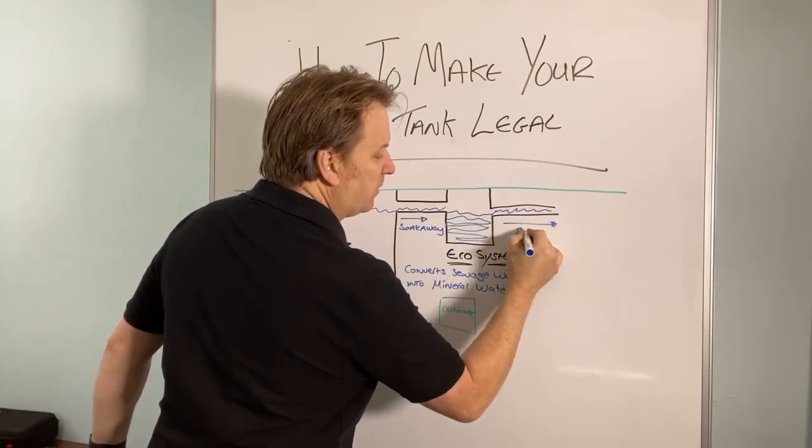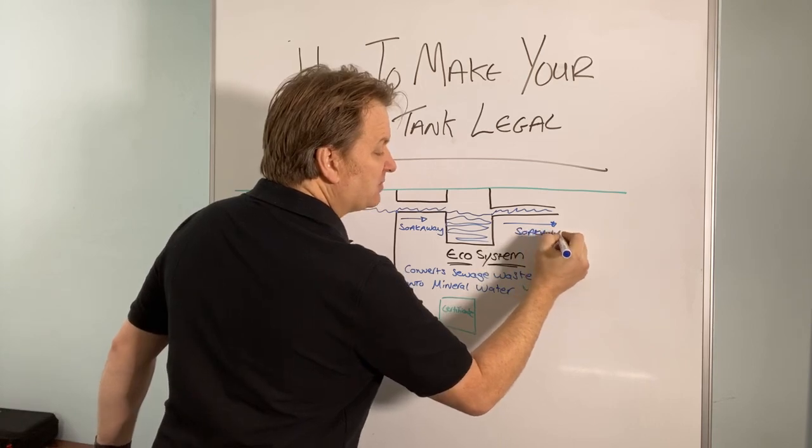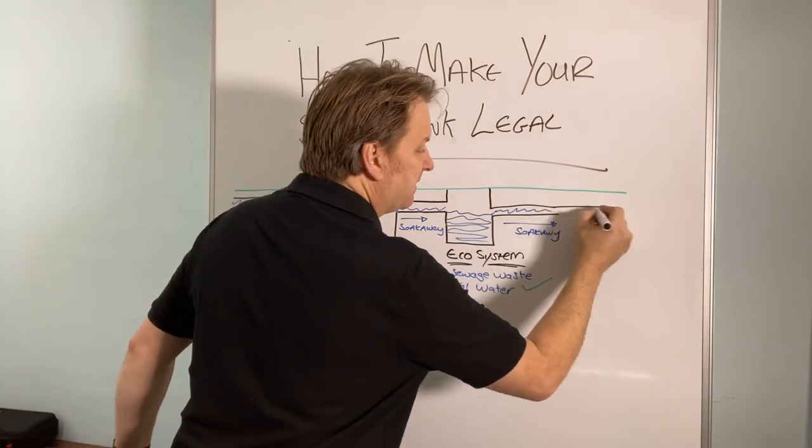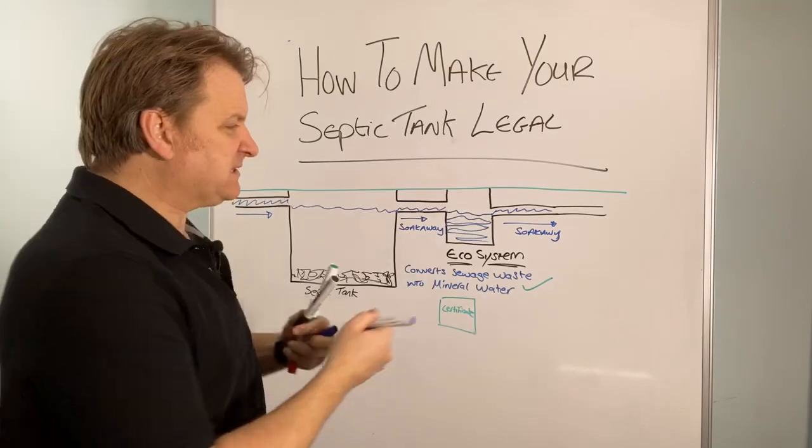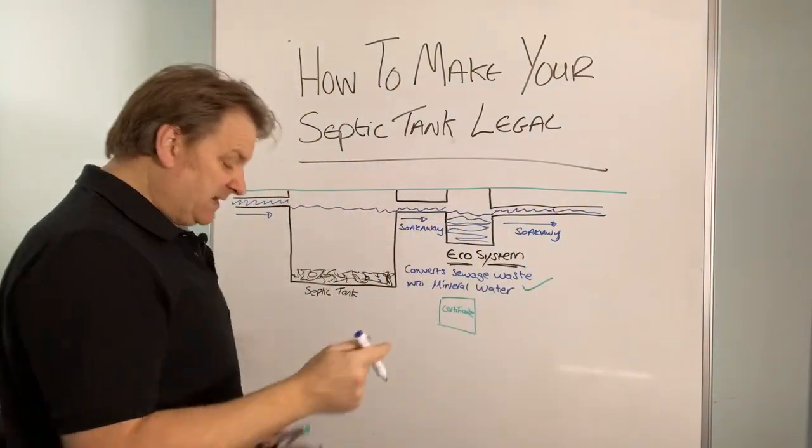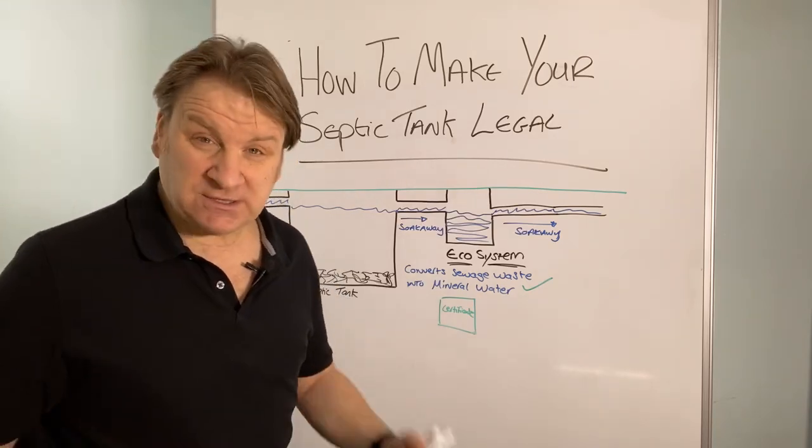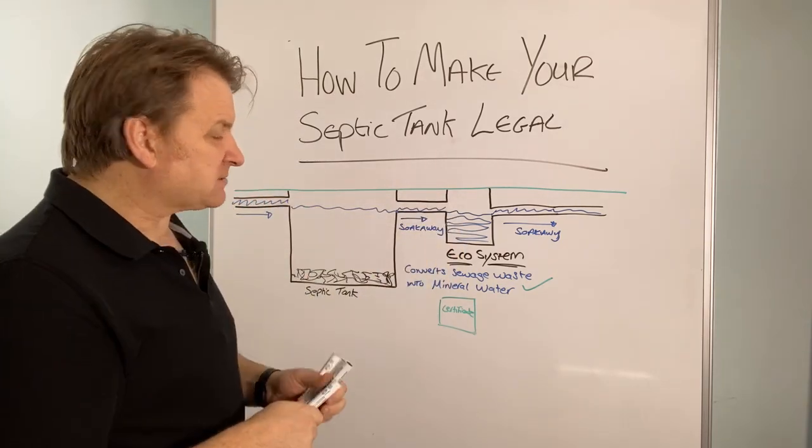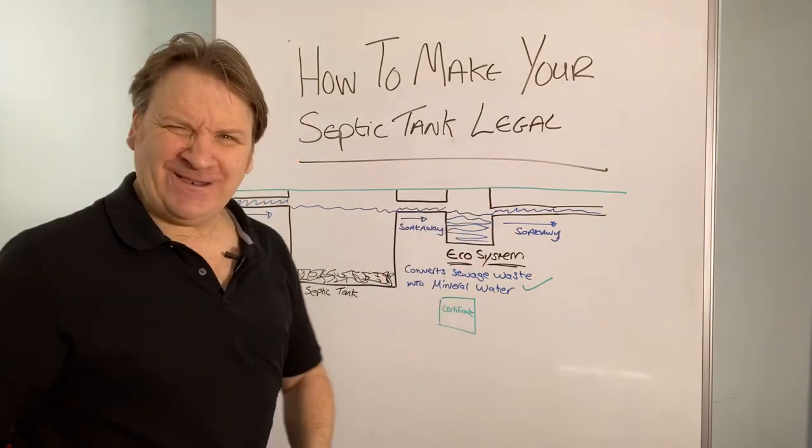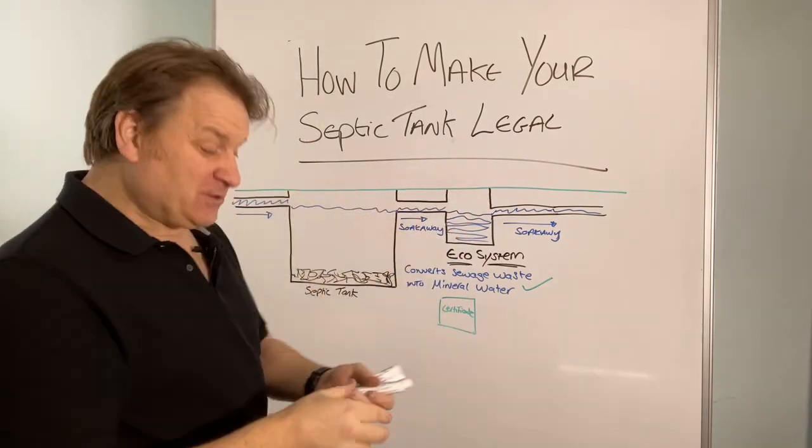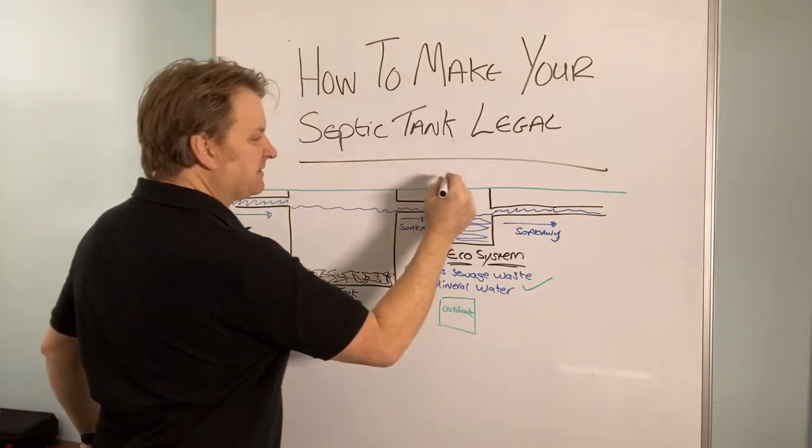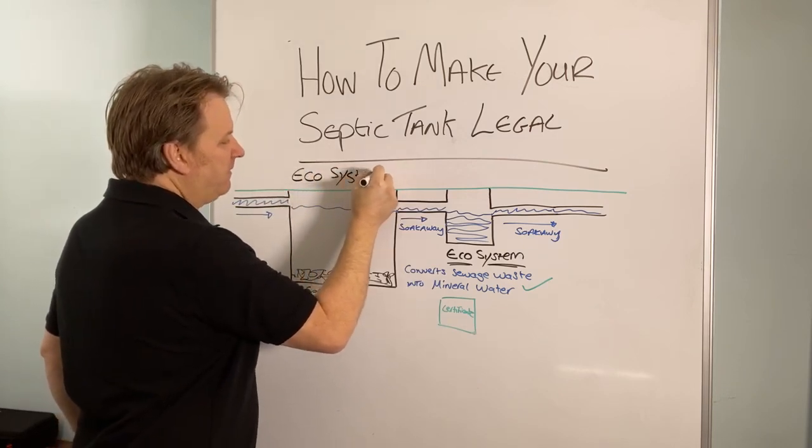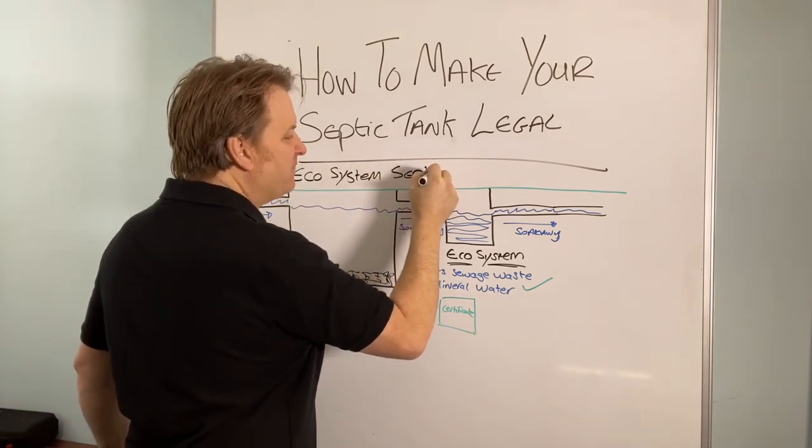And then the liquid that leaves that and goes to a soak away or watercourse or a river actually converts sewage waste so that the mineral water can then carry on to wherever it was going on your property. So let's say your septic tank originally went to a river, a stream, a brook, maybe it went to a pond or a lake. Let's say it just went into the soil, which many septic tanks do. This little black box, just you dig a little hole, you put this black box in and it converts your septic tank into a treatment plant. That's what it's called, the ecosystem septic tank converter.